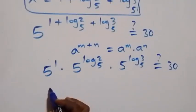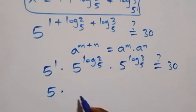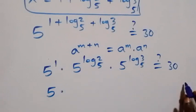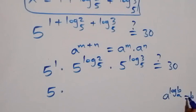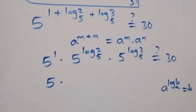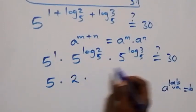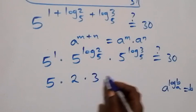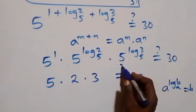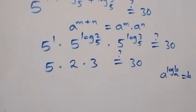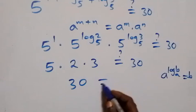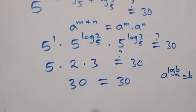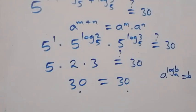Then here 5 raised to power 1 is 5. This follows from when we have a raised to power log_a(b) which equals b. So 5 raised to power log₅2 is 2, and 5 raised to power log₅3 is 3. This gives 5 times 2 times 3 equals 30, and of course 5 times 2 is 10, times 3 is 30, which equals 30 on this side. Now we have the left-hand side equals the right-hand side.